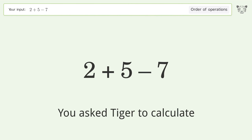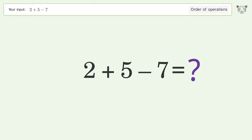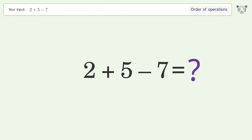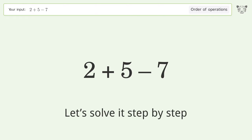You asked Tiger to calculate. This deals with the order of operations. The final result is zero. Let's solve it step by step.